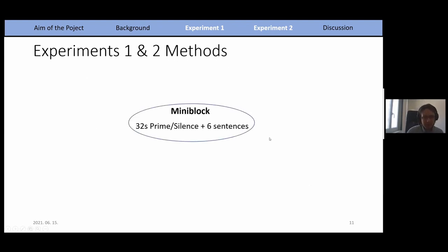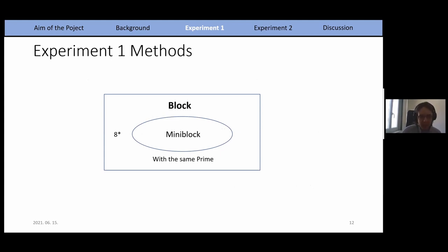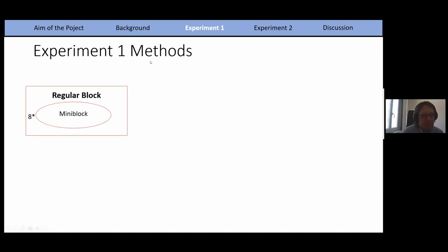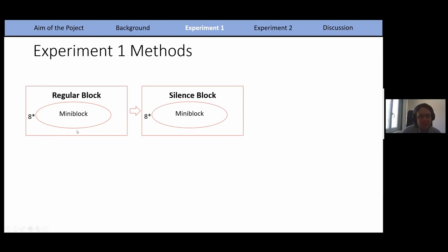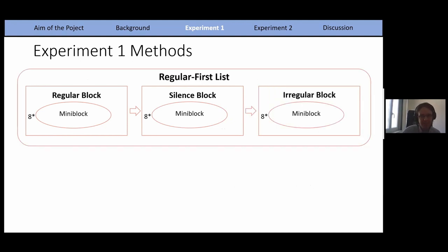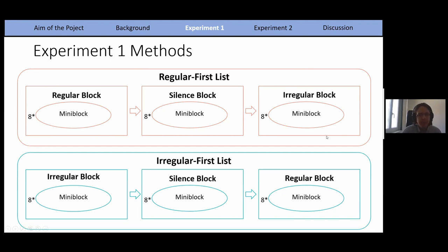For the priming procedure, we will borrow from the literature. Each mini block consists of a 30-second rhythmic prime, or 30 seconds of silence, followed by six sentences. Eight of these mini blocks with the same prime form one block. Each participant receives a regular block, then a silence block, then an irregular block as one experimental list. Half of participants hear regular first and the other half hear irregular first. Silence is always in the middle to serve as a buffer zone between the two rhythmic primes.